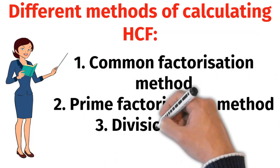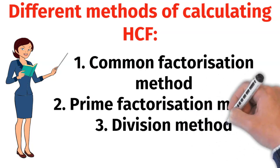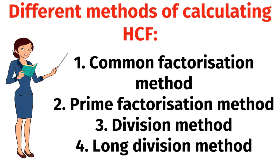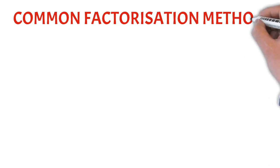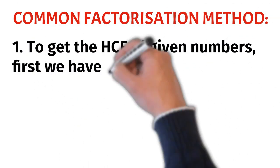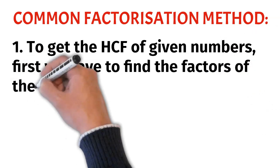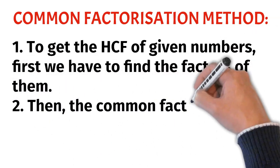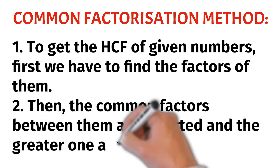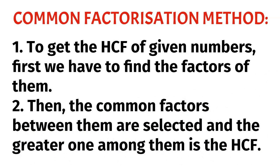The four methods are: common factorization method, prime factorization method, division method, and long division method. First, let's discuss about the common factorization method. To get the HCF of given numbers, first we have to find the factors of them. Then the common factors between them are selected and the greater one among them is the HCF.